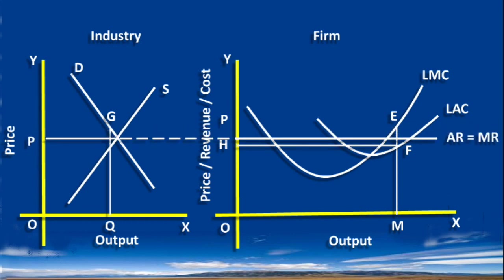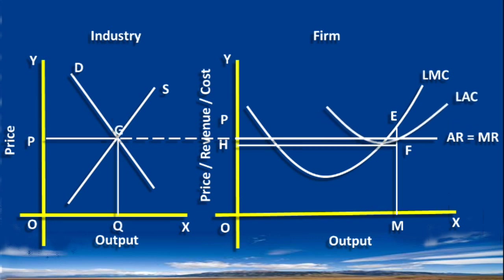On the other hand, the demand for the factors of production goes up, and the prices of the factors will also go up. The cost curve shifts upward. A new equilibrium is formed.